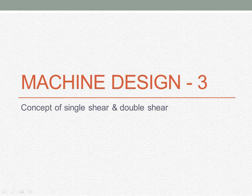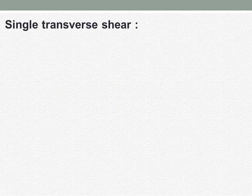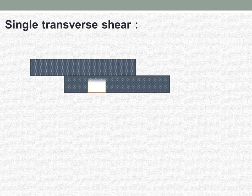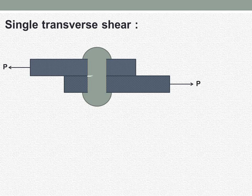In this video we will try to understand the concept of single shear and double shear in machine design. For understanding single shear, we have taken into consideration the example of a lap joint.